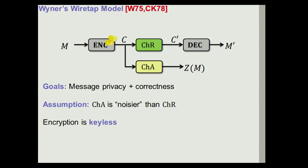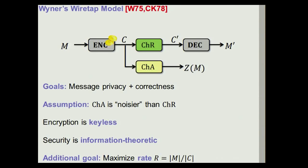In particular, there are no keys, so encryption is completely keyless. Security is going to be information theoretic, so we don't want to make any computational assumptions. In this line of work and also in this talk, there is usually an additional goal: we want our encryption scheme to be as space efficient as possible, in a sense that what we call the rate — the ratio between the ciphertext length and the message length — should be as large as possible.